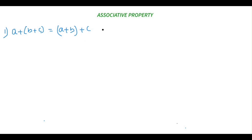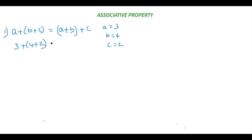Let's take the value of a as 3, b as 4, and c as 2. I am just taking very simple values — you can try with greater values using the same law and prove it. So in place of a, b, and c, I am going to substitute: 3 plus (4 plus 2) equals (3 plus 4) plus 2.